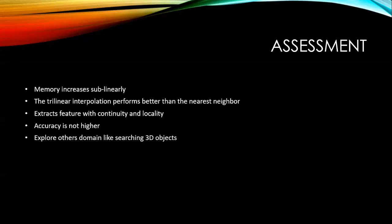So the convolution operation extracts regions with continuity and locality. PV-CNN increases the measured speedup and reduces memory consumption, but the accuracy is not increased so high. This paper has focused on the detection of 3D objects. It would be good work to apply this technique in other domains like searching 3D objects.